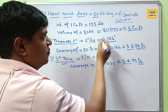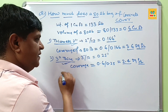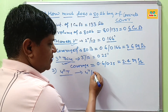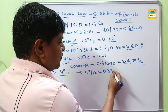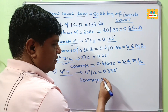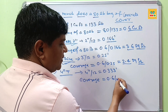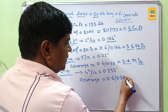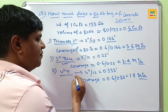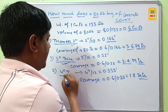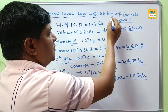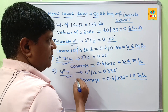For 4-inch thickness, convert 4 inches into feet, which comes to about 0.33 feet. The coverage of an 80 lb bag of concrete at 4-inch thickness is found by dividing 0.6 by 0.33, which comes out to about 1.8 square feet. So one 80 lb bag of concrete covers 1.8 square feet at 4-inch thickness.